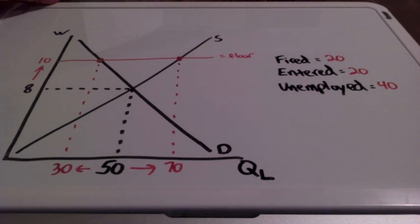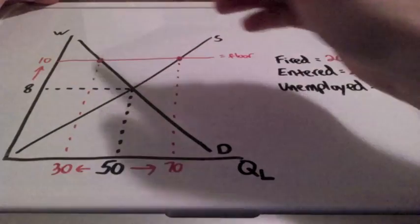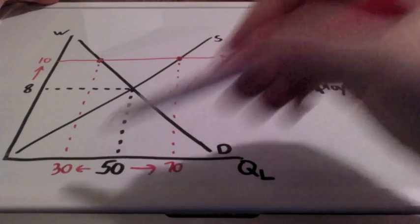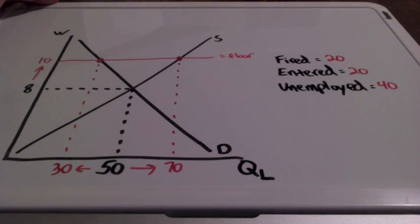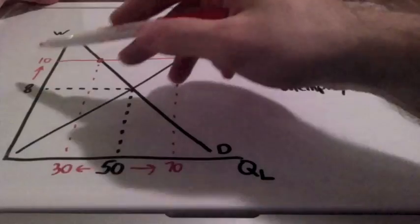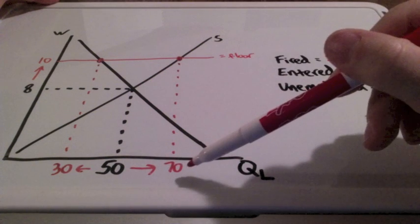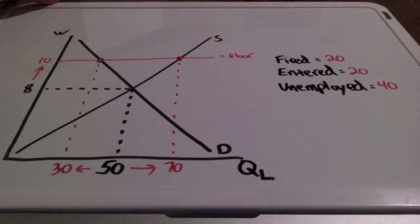So as you can see, there is an inverse relationship between wage and quantity demanded of workers, and there is a direct relationship between wage and the quantity supplied of workers.